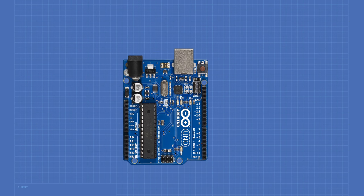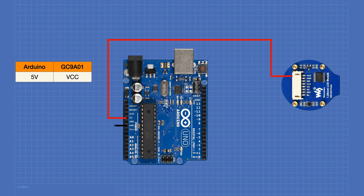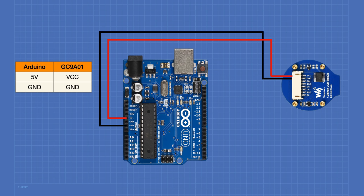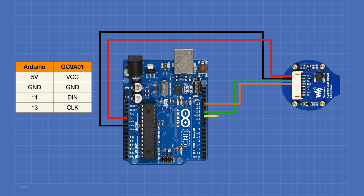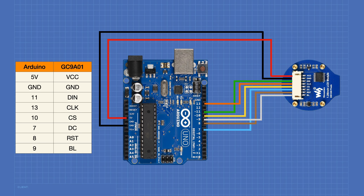The only components we require are an Arduino Uno and a GC9A01 round LCD display. We begin by connecting the 5 volt output of the Arduino to VCC on the display, and the Arduino's ground to the display's ground. Pin 11 connects to DIN (data input), pin 13 to the clock line, pin 10 to CS (chip select), pin 7 to DC (data command), pin 8 to RST (reset), and digital output pin 9 to the BL (backlight) input. That completes our wiring.